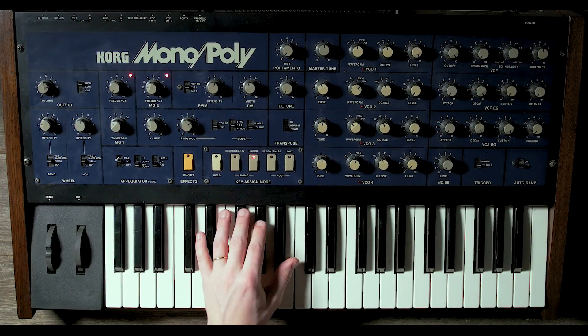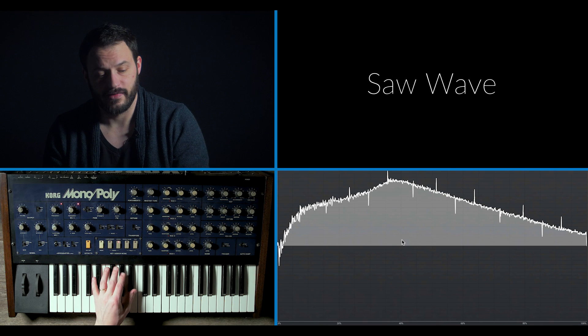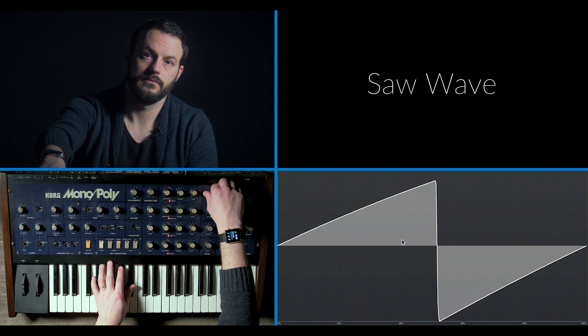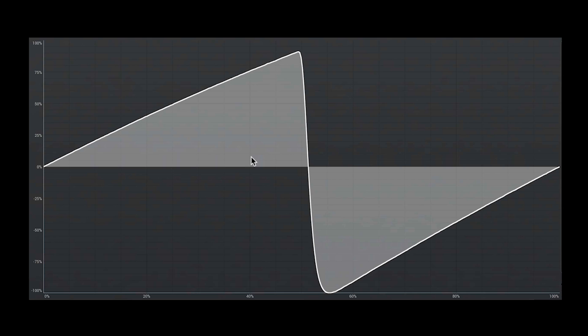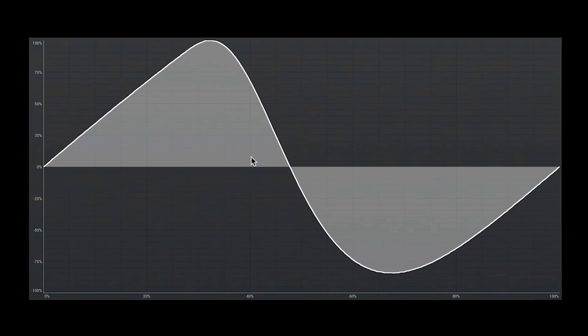First let's take a look and a listen at saw waves. Sounds like this. You can hear that's just the raw oscillator generating that sawtooth waveform, and you can hear a lot of excitement, a lot of brightness in the high end. It's really great for synthesizing sounds like strings where you really want to get some of that energy and excitement in the upper range.